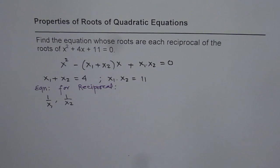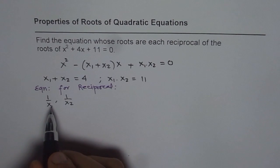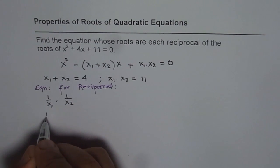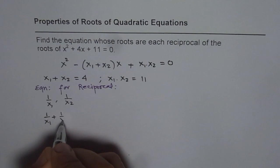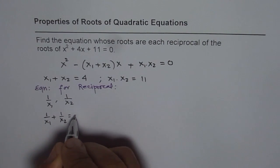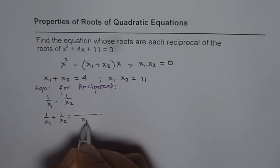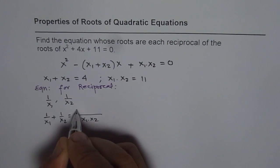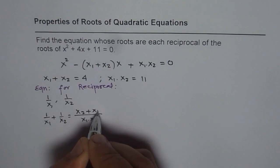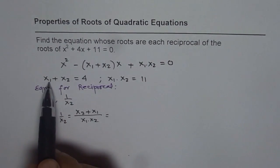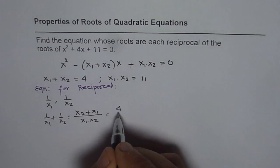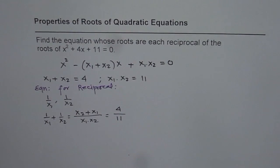I think everything comes together now. So let us first find the sum. What is 1/x₁ + 1/x₂? We will take x₁x₂ common and it becomes (x₂ + x₁)/(x₁x₂). Now, we know x₁ + x₂ is 4 and the product is 11, so we get sum as 4/11.